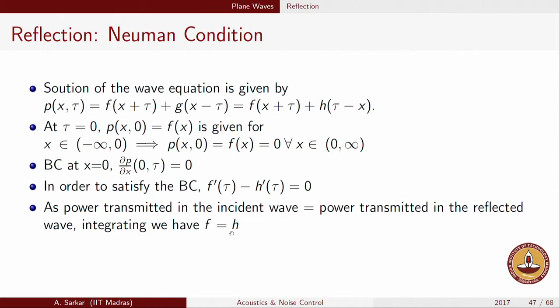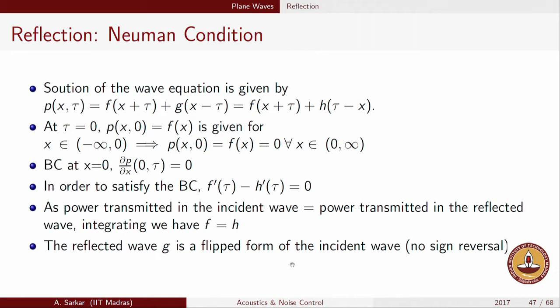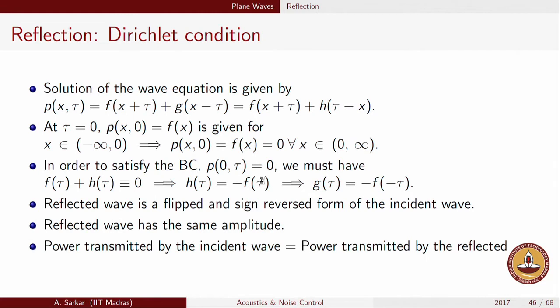Integrating F prime equals H prime with respect to tau gives F equals H plus C, but C must be 0. If C were not 0, there would be an imbalance in amplitude between the incident and reflected waves, leading to an imbalance in transmitted power — which is not physically possible. Therefore the integration constant is 0, and we get F equals H. Recall that in the Dirichlet condition we got F equals minus H. So this time the reflected wave is a flipped form of the incident wave with no sign reversal.